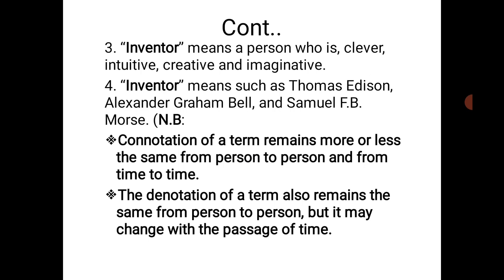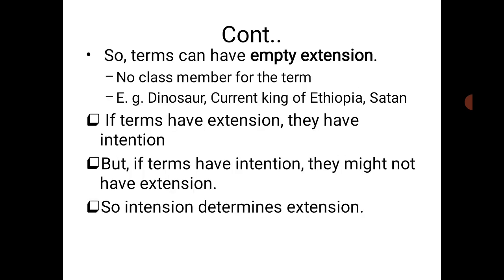The connotation of a term remains more or less the same from person to person and from time to time. The denotation of a term also remains the same from person to person, but it may change with the passage of time. Some terms have empty extension — for example, 'dinosaur' or 'the current king of Ethiopia.' These terms have intension but no extension.